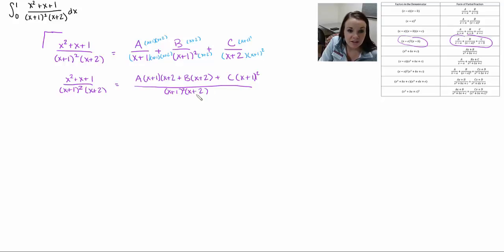Now if you notice our denominators now are the same. So those cancel out. And I can go ahead and I can foil this out, foil this out, and then distribute.